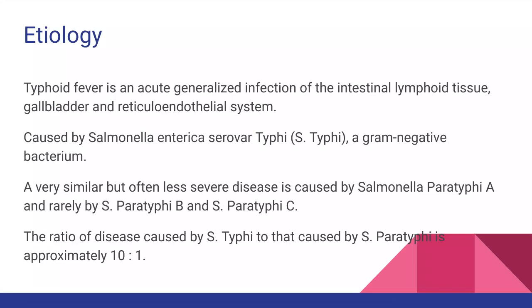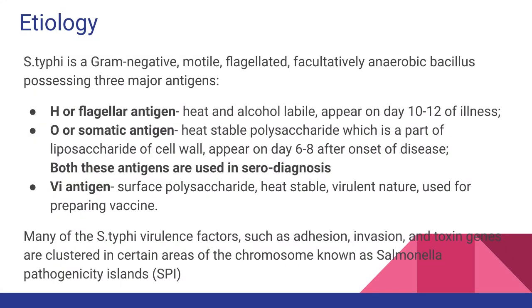It is caused by three types of Salmonella: Salmonella typhi, Salmonella paratyphi A, and rarely by Salmonella paratyphi B. Salmonella is a gram-negative bacterium, and the ratio of disease caused by S. typhi to that caused by S. paratyphi is approximately 10 to 1. S. typhi is a gram-negative, motile, and flagellated bacteria; it is a facultative anaerobe.